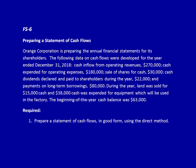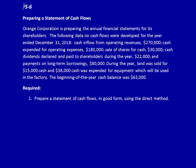We need to denote for each of these items two things: whether it's an inflow or an outflow, and whether it goes into operating, investing, or financing activities. Cash inflow from operating revenues — this belongs in operating activities and it's an inflow, so it's a plus. Cash expended for operating expenses — expended means an outflow and this is operations.